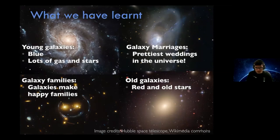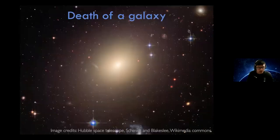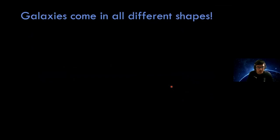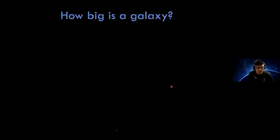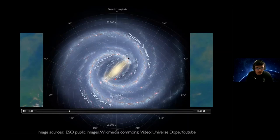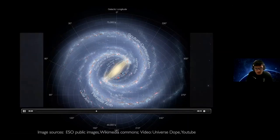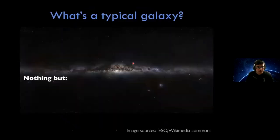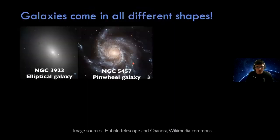We've reached the end of the main presentation, so now I can start answering questions. First question: is our galaxy a pinwheel? The Milky Way is more like a small bar plus a spiral — it's not exactly a pinwheel. A pinwheel means all the arms start right from the center. The Milky Way has a bar in the center and is one of the barred spiral kinds.